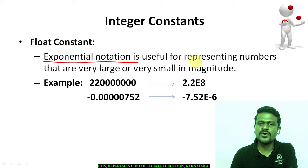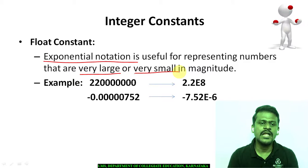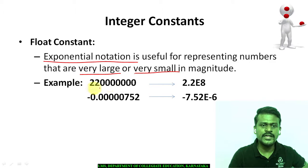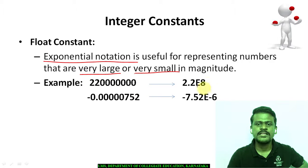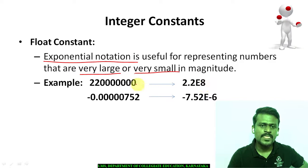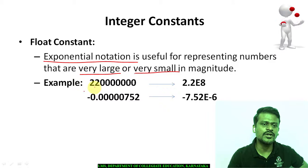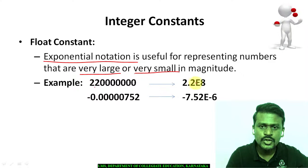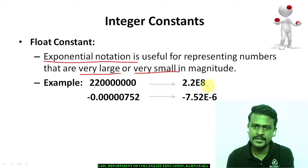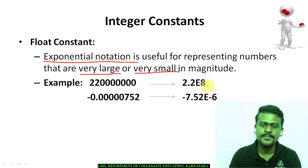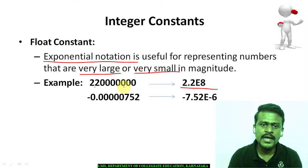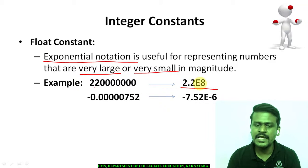The exponent notation is useful for representing very large numbers or very small numbers. For example, a large number like 220,000,000 can be converted into a smaller form: 2.2e8, which means 2.2 raised to the exponent of 8. Counting the digits — 1, 2, 3, 4, 5, 6, 7, 8 — the number 2.2e8 exactly represents 220,000,000.